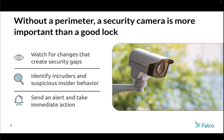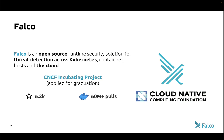If someone gets over the wall around your property — or maybe they're already inside due to a mistake or a disgruntled employee — how do you know what's going on? You might use a security camera to monitor the inside, looking for people wandering where they shouldn't be or doing something suspicious. That's the next level of protection. And that's kind of how we look at Falco — we look at Falco as a security camera for your workloads.